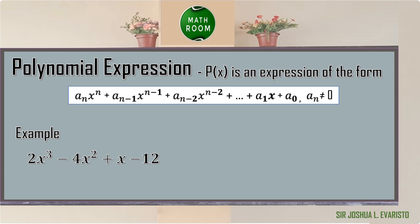For example: 2x cubed minus 4x squared plus x minus 12, wherein we have 4 terms and the degree of the polynomial expression is 3. The first term, 2x cubed, contains 2 as a coefficient; negative 4 for the second term; 1 for the third term with an exponent of 1; and the fourth term is negative 12, which is the constant number.